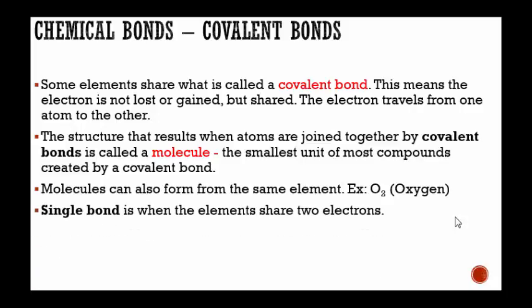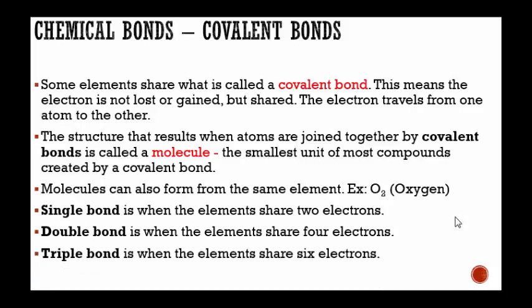There are things that have a single bond, which is when the elements share two electrons. It can also have a double bond, which is when the elements share four electrons. It can also have a triple bond when the elements share six electrons.